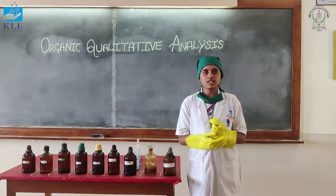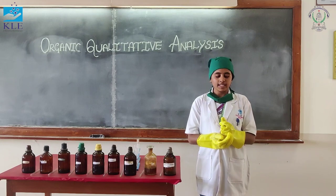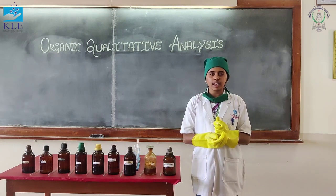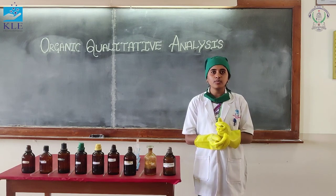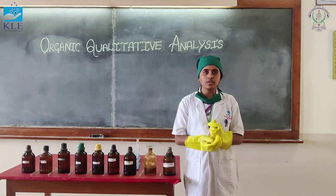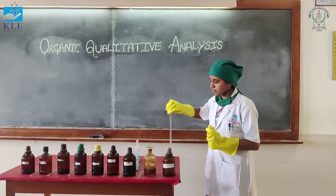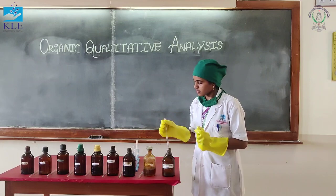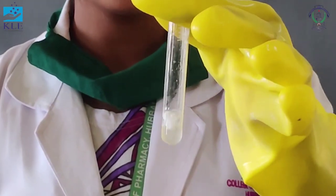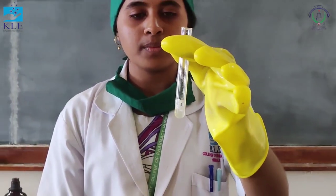The seventh test is further classification within Group 4, i.e., carboxylic acids and phenols. Let us perform the classification reactions for Group 4. Take the compound and add sodium bicarbonate solution to it. Effervescence is produced, which means it belongs to the acid group.